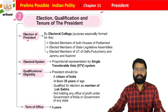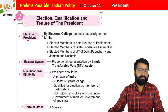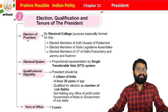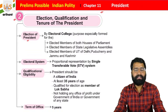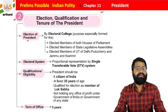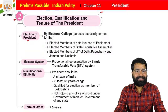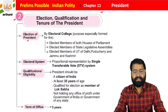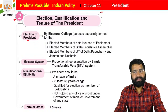We already discussed that there is an electoral college consisting of elected members of Parliament, elected members of Legislative Assemblies of states, and elected members of Legislative Assemblies of Delhi, Pondicherry, and Jammu & Kashmir. This election is based on the indirect method — proportional representation by single transferable voting system. The qualifications for a presidential candidate include being qualified to be a member of Lok Sabha, being at least 35 years of age, being a citizen of India, and not holding any office of profit under the central or state government.